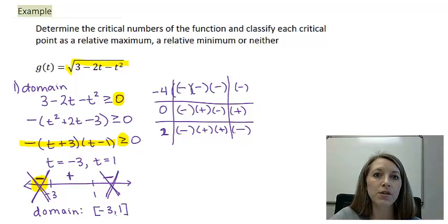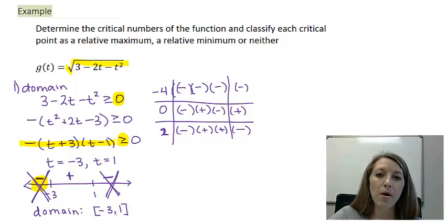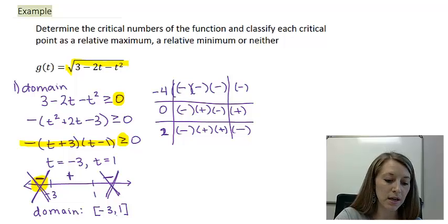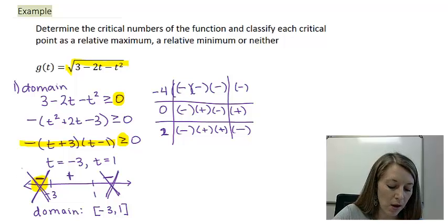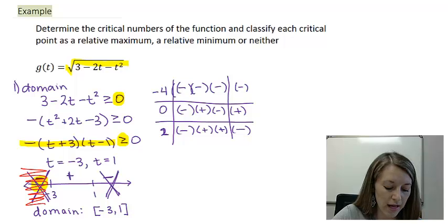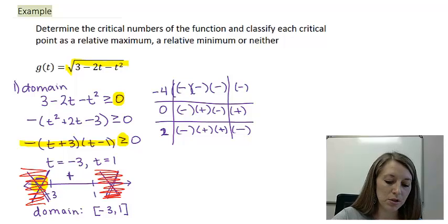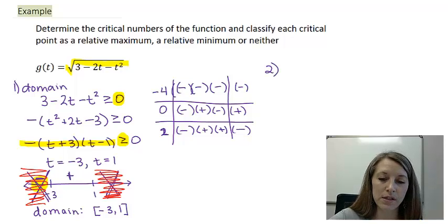So the domain is the closed interval [−3, 1]. This sign chart also helps us with the next step: when we build the sign chart for increasing and decreasing, we already know we won't need to include anything less than −3 or greater than 1, because the function is not defined outside that interval. Now, step 2 is to take the derivative.